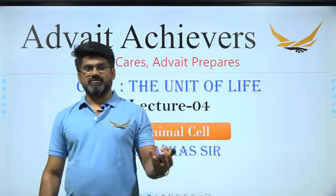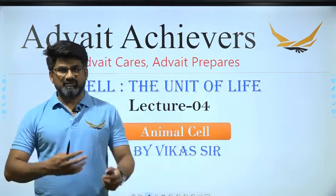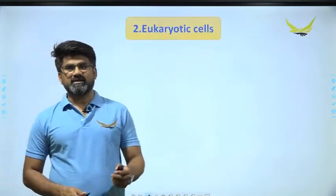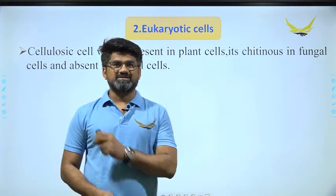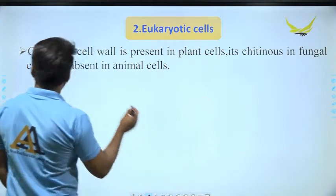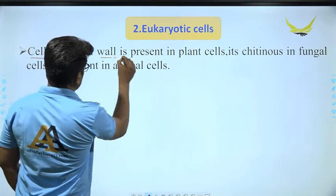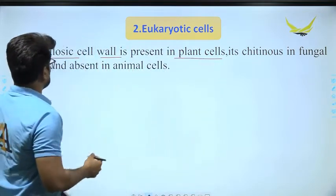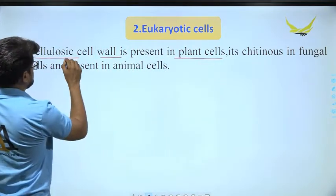Today we are going to discuss the next type of cell, which is the eukaryotic cell. If the eukaryotic cell is a plant cell, then it has a cellulosic cell wall — meaning the plant cell wall is made up of cellulose.